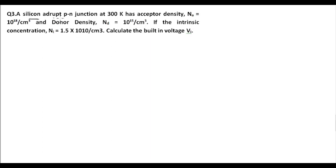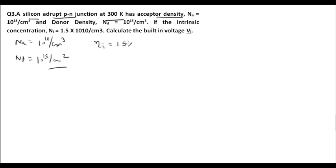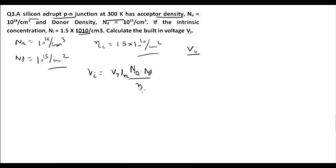Question number three: A silicon abrupt PN junction at 300 K has an acceptor density Na = 10^18 per cm³ and a donor density Nd = 10^15 per cm³. The intrinsic concentration ni = 1.5 × 10^10 per cm³. We have to find the built-in voltage. The built-in voltage formula is: V0 = Vt × ln(Na × Nd / ni²).